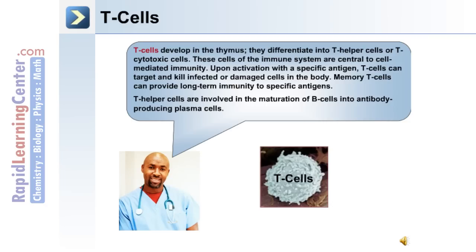The second major type of lymphocytes in the lymphatic system are the T cells. T cells develop in the thymus and differentiate into T helper cells or T cytotoxic cells. These cells are central to cell-mediated immunity. Upon activation with a specific antigen, T cells can target and kill infected or damaged cells in the body. Memory T cells can provide long-term immunity to specific antigens, and T helper cells are involved in the maturation of B cells into antibody-producing plasma cells.